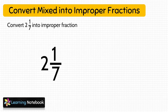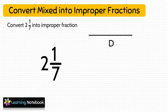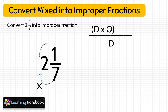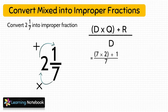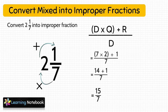Let's do one more: convert 2 and 1 by 7 into an improper fraction. The denominator remains 7. To find the numerator, we multiply divisor 7 by quotient 2, then add remainder 1. So we get (7 × 2 + 1) upon 7, which equals (14 + 1) upon 7, which is 15 by 7. We have converted mixed fraction 2 and 1 by 7 into improper fraction 15 by 7.